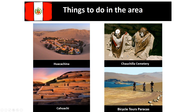One of the more interesting things is the Chauchilla Cemetery, just outside of Nazca. The Nazca culture used to preserve the body much like the Egyptians — removing the organs and mummifying their dead. Because of the very dry conditions, they've been found in the desert, and some of these mummies are up to 1,500 years old. Also on offer are the pre-Inca aqueducts, which can also be visited from there.